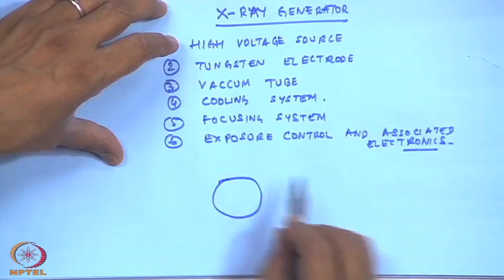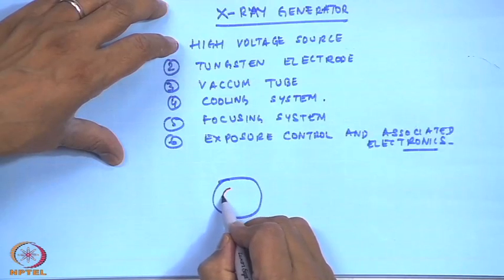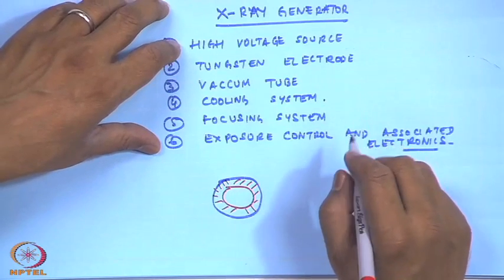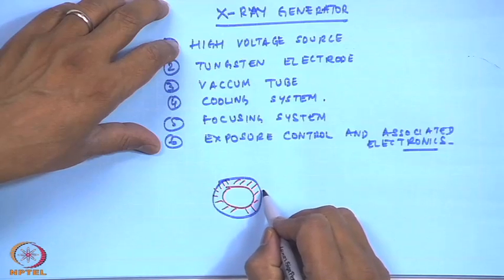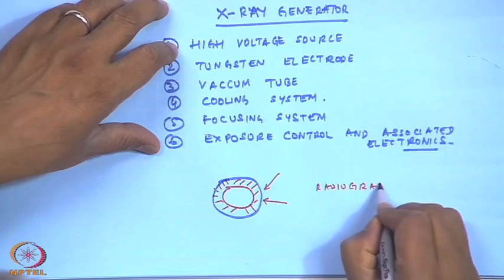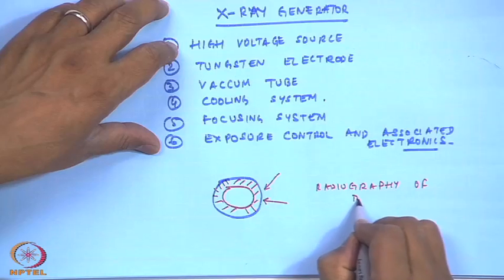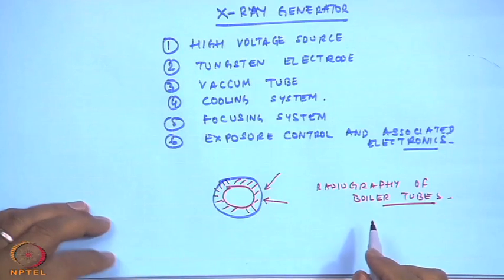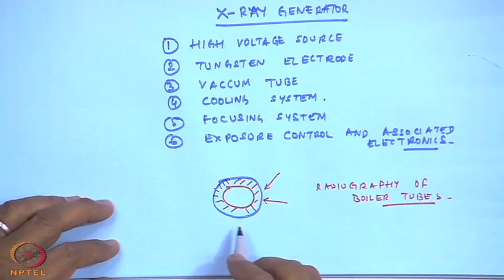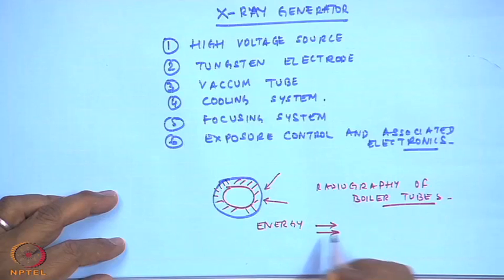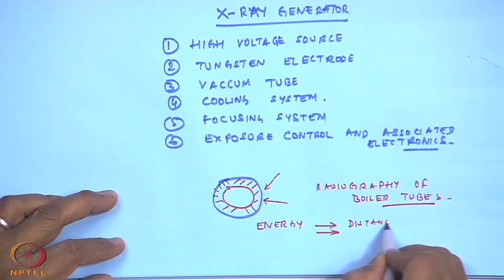Radiography of boiler tubes is one application where x-rays are used. The energy ultimately depends on two important factors: distance and exposure time. We have to be very careful while handling x-rays and more careful while handling gamma rays because gamma rays are radioactive. There has to be good shielding so that human beings are not exposed to industrial x-rays. There are medical x-rays used in hospitals — for example, to find out a broken bone — and industrial x-rays.